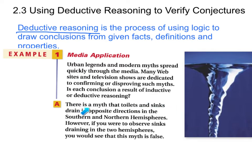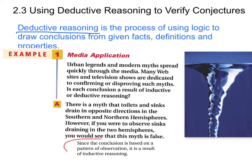There is a myth that toilets and sinks drain in opposite directions in the southern and northern hemispheres. However, if you were to observe sinks draining in the two hemispheres, you would see that this myth is false. A lot of people think everything above the equator drains one way and everything below drains the other way. Since you're actually going and observing a pattern, this conclusion — based on the pattern of observation — is a result of inductive reasoning.